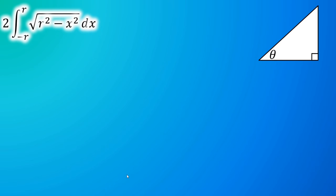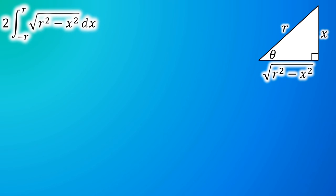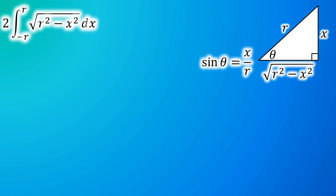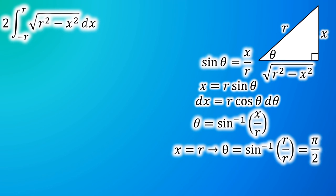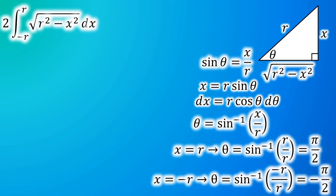Here's the right triangle with angle theta. Let the opposite side be x and the hypotenuse be r. By the Pythagorean theorem, the adjacent side is √(r²−x²). So sin(θ) = x/r, which gives x = r·sin(θ), and taking the derivative, dx = r·cos(θ)·dθ. Since θ = arcsin(x/r), when x = r, θ = arcsin(1) = π/2, and when x = −r, θ = arcsin(−1) = −π/2.